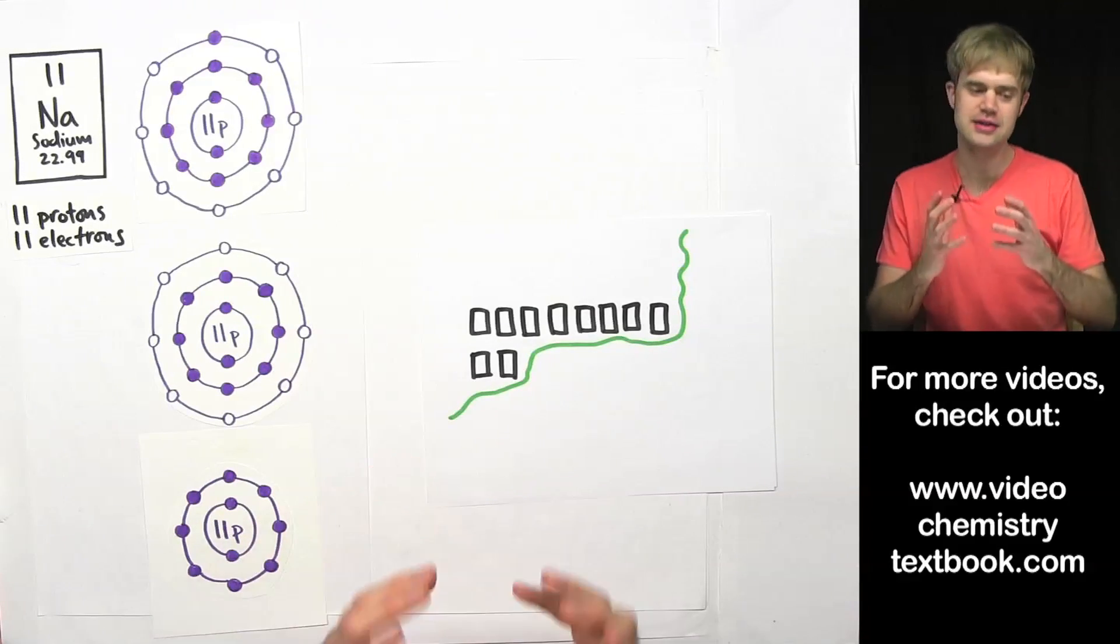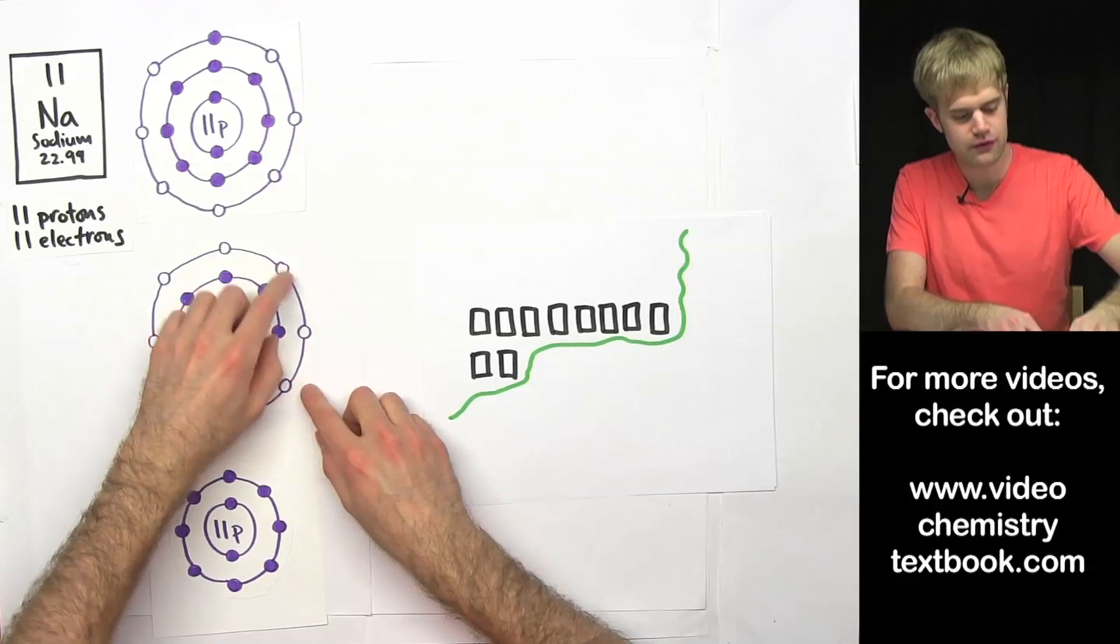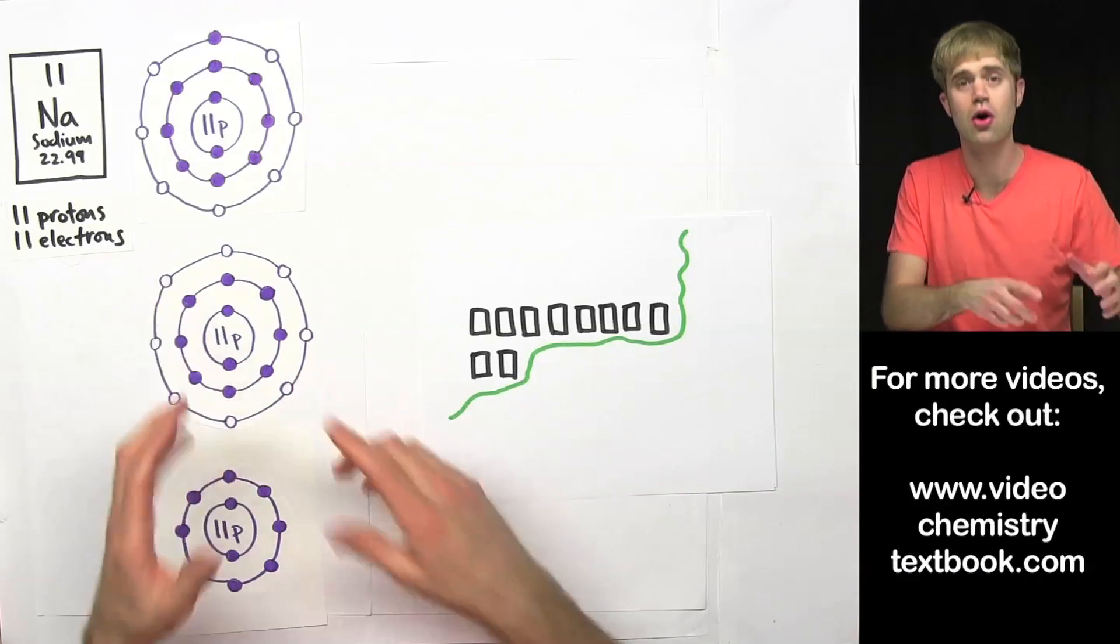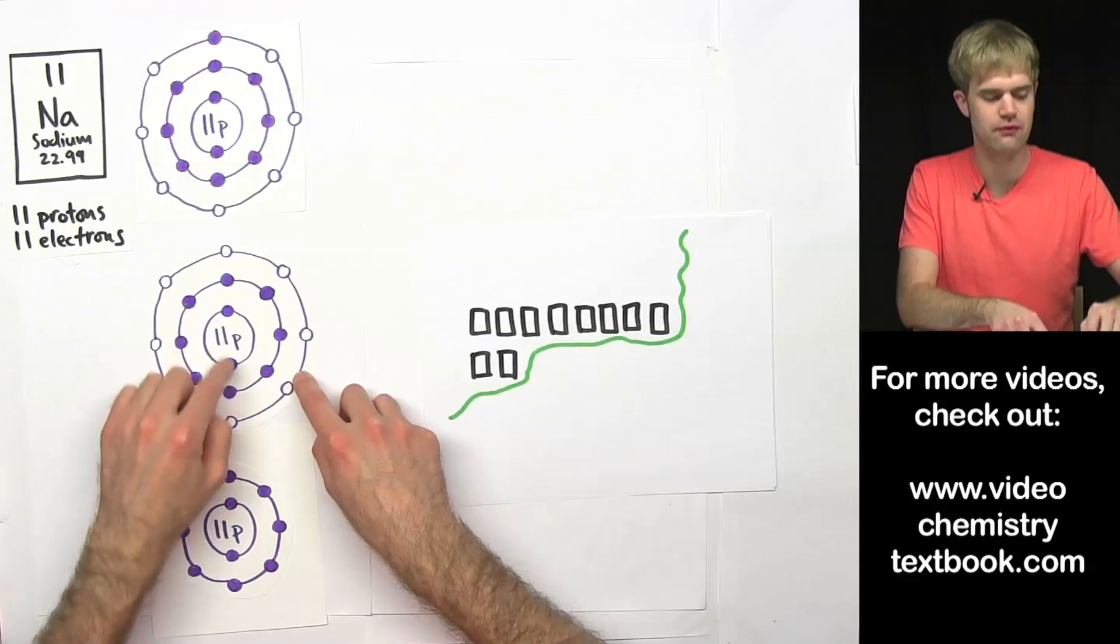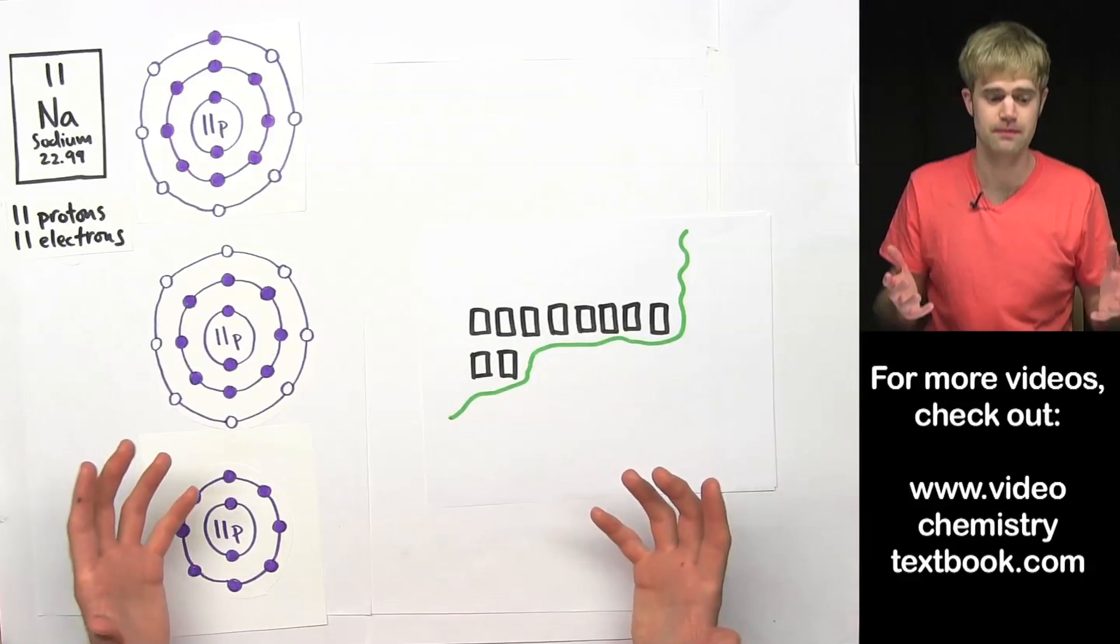So I realize this is a little bit tricky because I often draw energy levels like this with the holes. But I'm just doing this so that you can know how many electrons can fit in each of the energy levels.